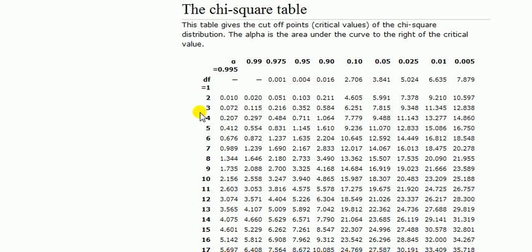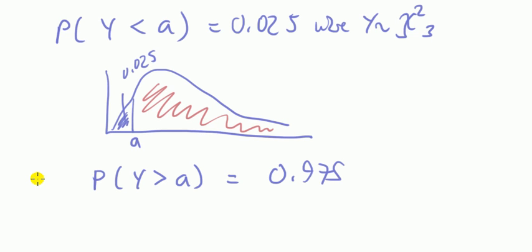3 degree of freedom. So, we've got alpha is again 0.975, 3 degree of freedom. That gives us 0.0216, which kind of sounds right, because we know we must be a number close to 0, because it's more, okay, 0.216.